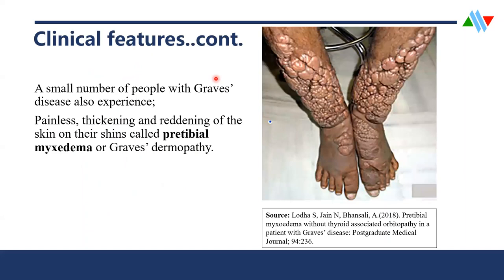There are some classical features to note. Some people — not all — who have Graves' disease experience what we call pre-tibial myxedema. Just on the anterior part of the tibia, we end up having some skin changes that look edematous — such kind of changes that we see in the skin. This is pre-tibial myxedema, sometimes referred to as Graves' dermopathy. This is experienced by only a small number of people.